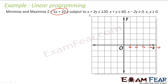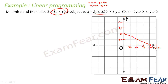Let's take x + 2y = 120. To find the intercepts: put x = 0, you get y = 60; put y = 0, you get x = 120. So the points are (120, 0) and (0, 60). Let's join these two points to get the first equation plotted on the graph.